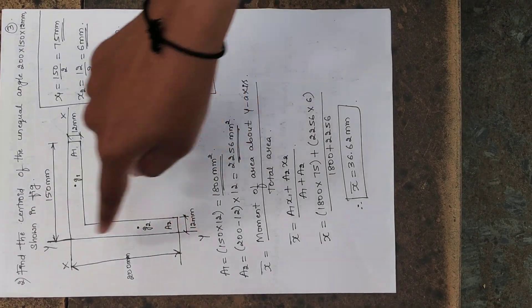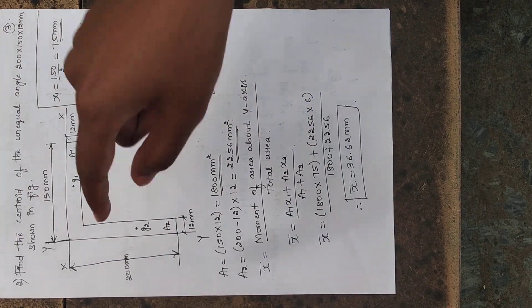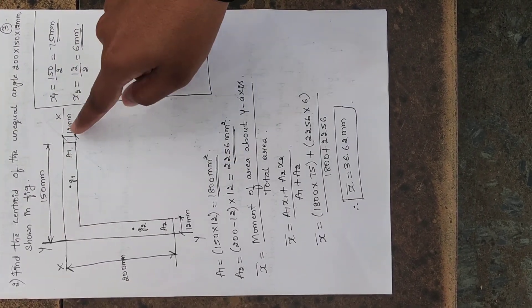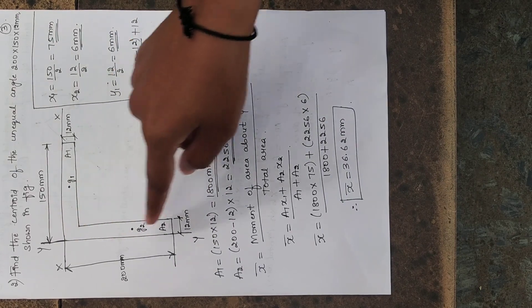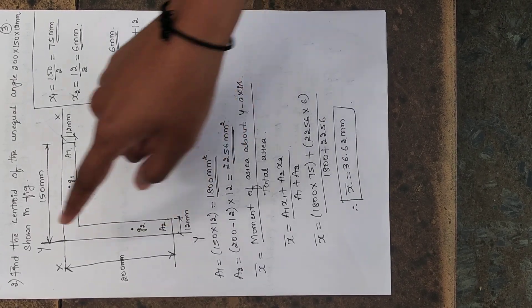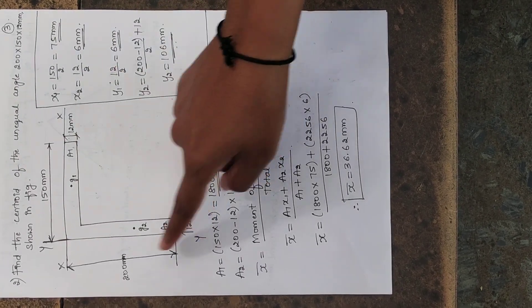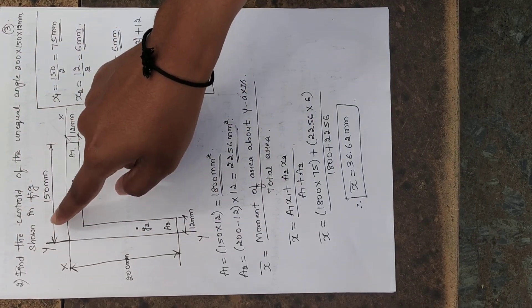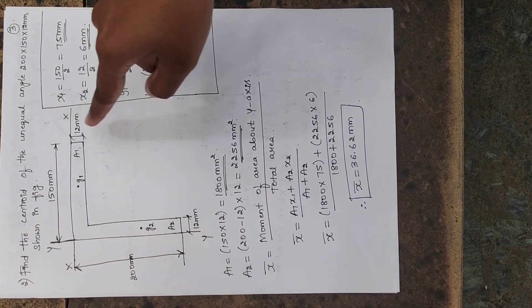Now, this figure will be given in the question. Here, the dimension of the flange as well as the web of the channel is given to you. The dimension of the web is 200 by 12 mm, whereas the dimension of the flange is 150 by 12 mm.